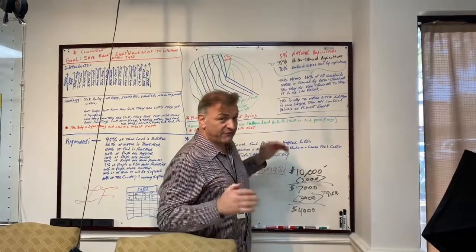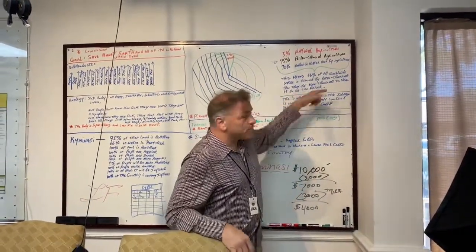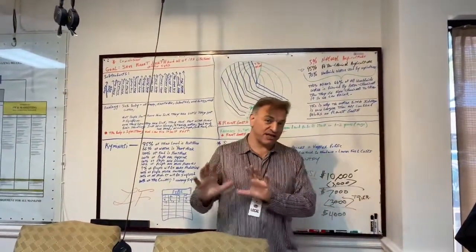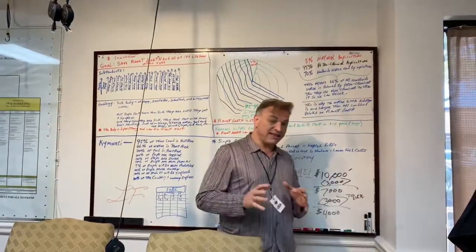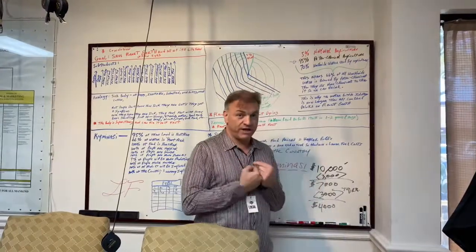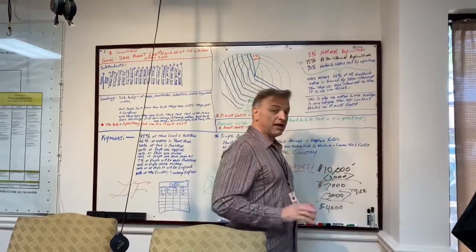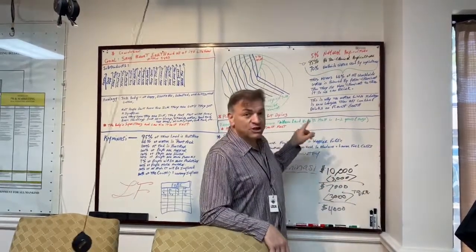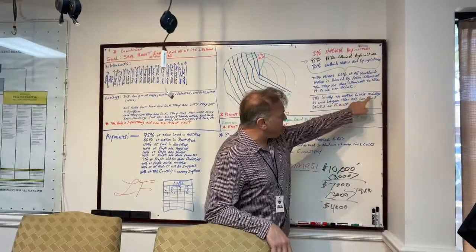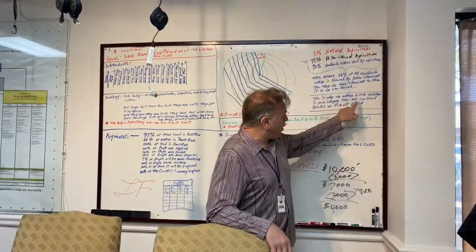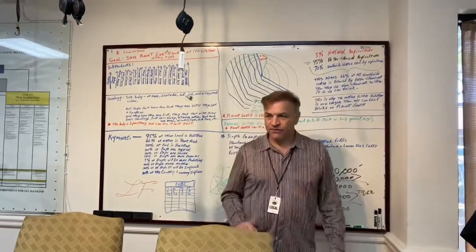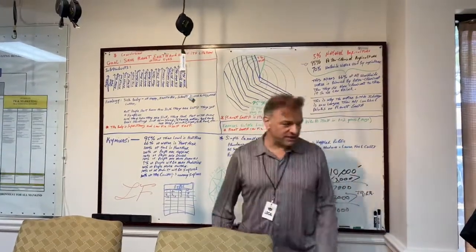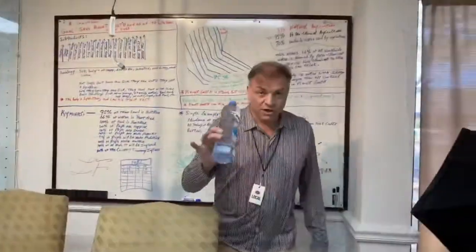Then, for us to drink water, they use more chemicals to clean the water so we drink it. First they put the chemicals because of agriculture, then they have to put more chemicals to clean the water so we can drink it. This is the reason why in the last 20 years, the water bottle industry is now larger than all combined drinks on planet Earth.